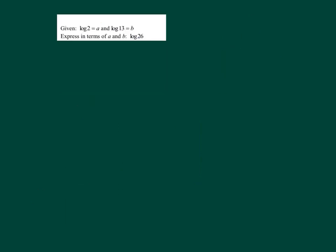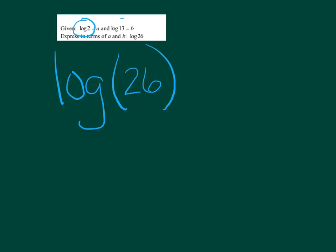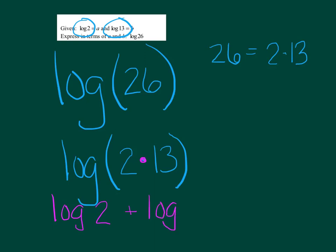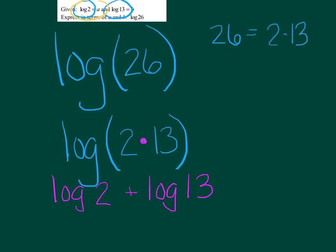Given log of 2 equals a and log of 13 equals b, express in terms of a and b: log of 26. I need to rewrite 26 using 2 and 13. I'd say 26 equals 2 times 13. Replacing: log of 2 times 13 — using log properties, times turns to addition: log of 2 plus log of 13. Replacing log 2 with a and log 13 with b gives a final answer of a plus b.